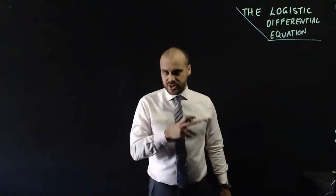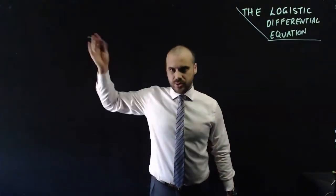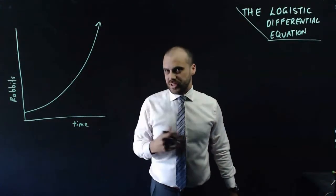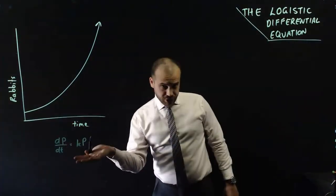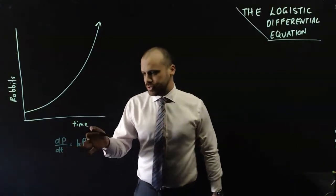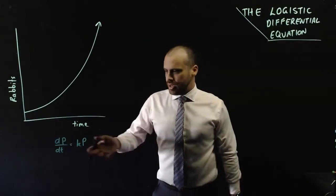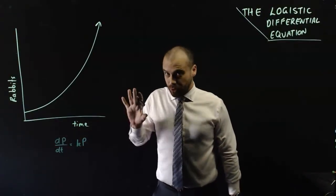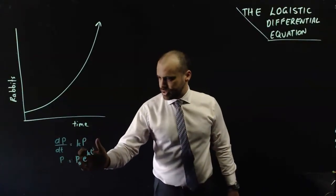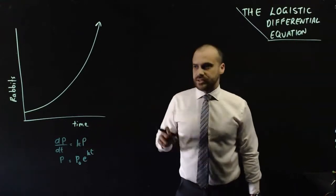Rabbits breed like rabbits. If you start with two, pretty soon you'll have four, then eight, then 16, 32, and so on. It ends up looking like an exponential equation. As a differential equation, it looks like this: the rate at which the population is changing with respect to time is equal to some growth factor times the population. The population equation becomes P equals the initial population times e to the kt, where k is the growth factor.